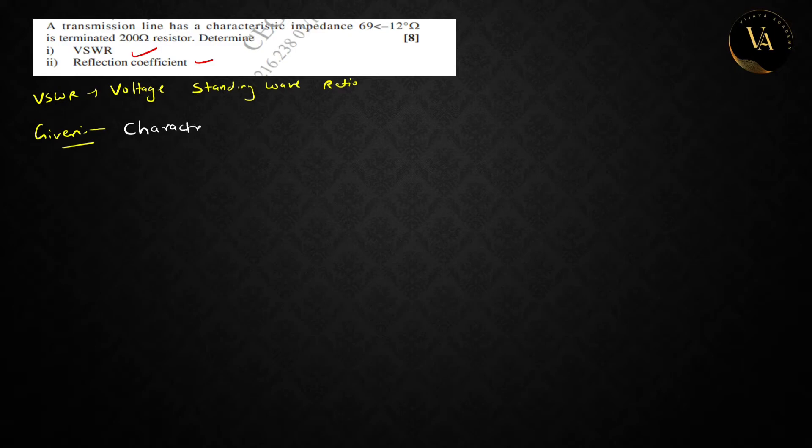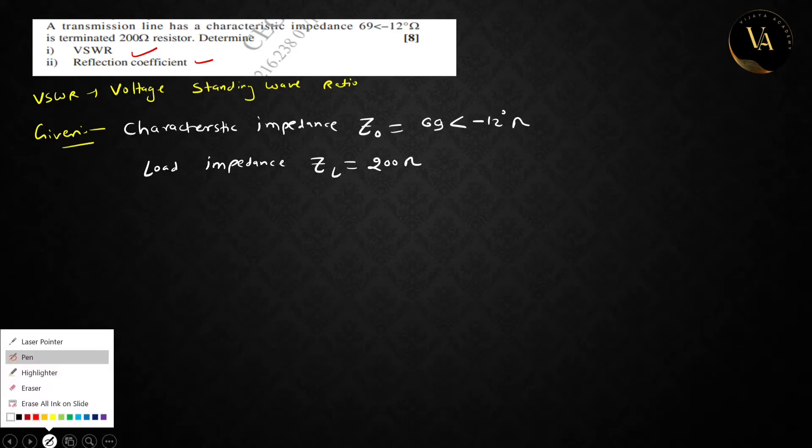Characteristic impedance Z₀ is 69 angle minus 12 degree ohm. Next, given is load impedance ZL which is 200 ohm. Okay, reflection coefficient.